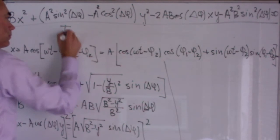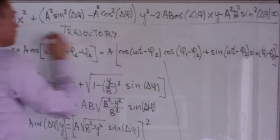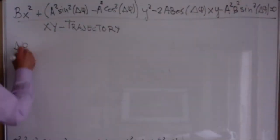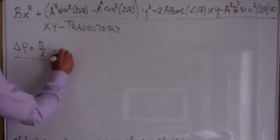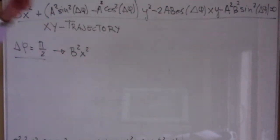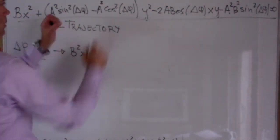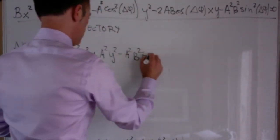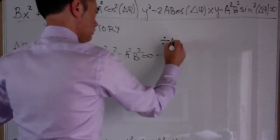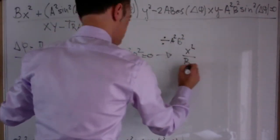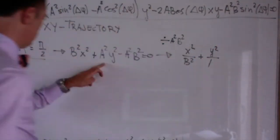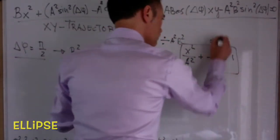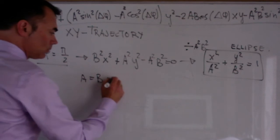And we find this equation for the trajectory on the two-dimensional plane. Note that it depends on the phase difference. For suitable phase differences, this can be turned into a straight line or into an ellipse, or into a circle if a and b are equal.